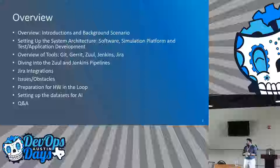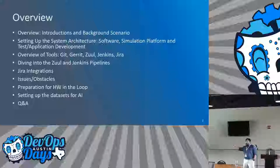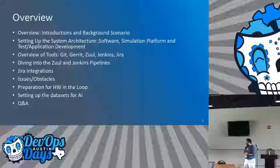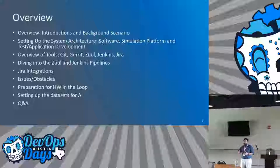We'll talk in more detail about how we've set up the Zuul and Jenkins pipelines, a little bit about Jira integrations and some of the issues we've faced. This is the second generation we are doing this. We plan to do DevOps with hardware in the loop. And lastly, I wanted to touch on setting up databases for an AI team to consume.